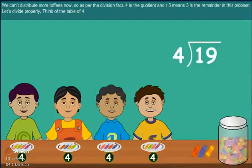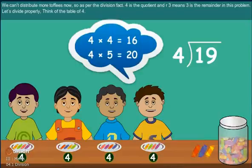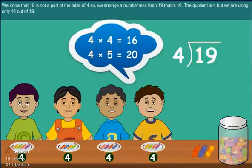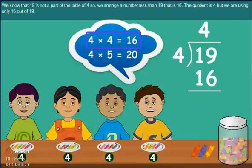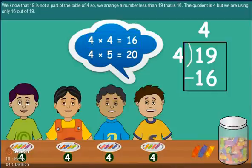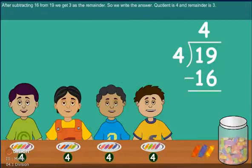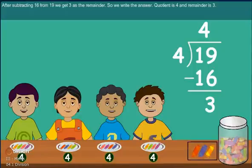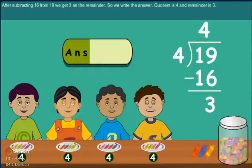Let's divide properly. Think of the table of 4. We know 19 is not in the 4 times table, so we take the nearest lower number, which is 16. The quotient is 4. Subtracting 16 from 19 gives 3 as the remainder. So the answer is: quotient is 4 and remainder is 3.